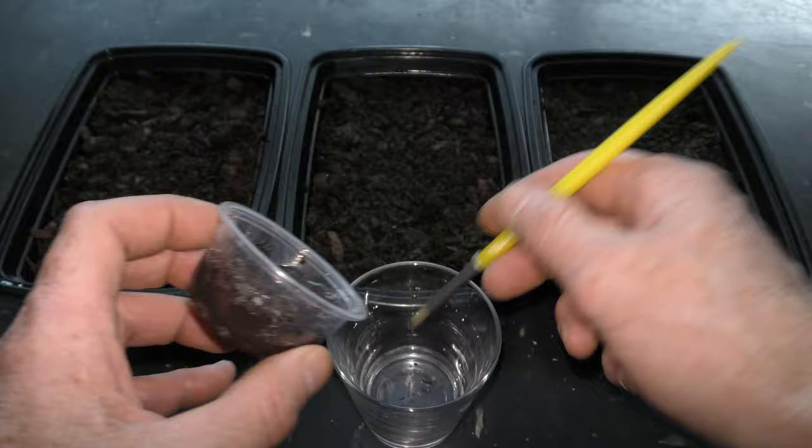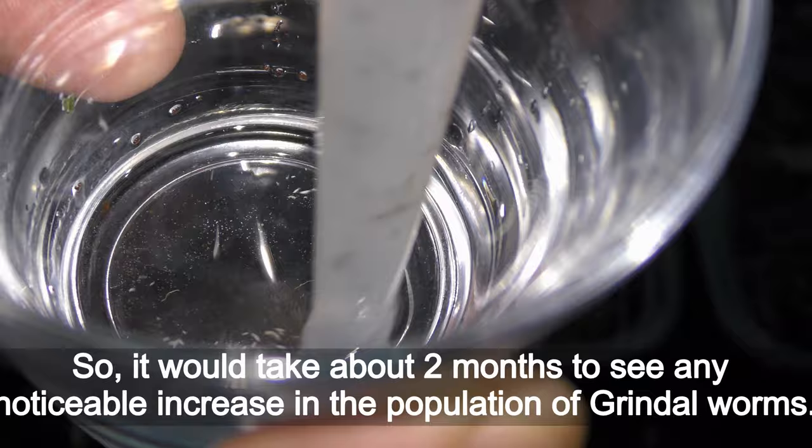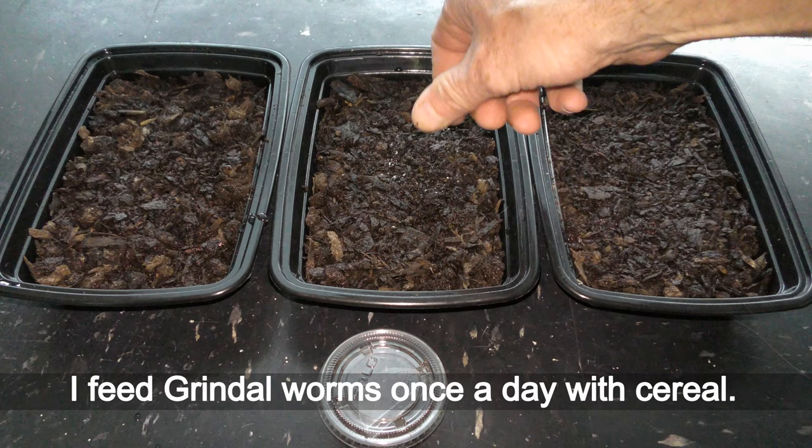It takes about a couple weeks for grindal worms to hatch from eggs. And then at the age of about one month, worms start laying clusters of eggs. So it would take about two months to see any noticeable increase in the population of grindal worms.